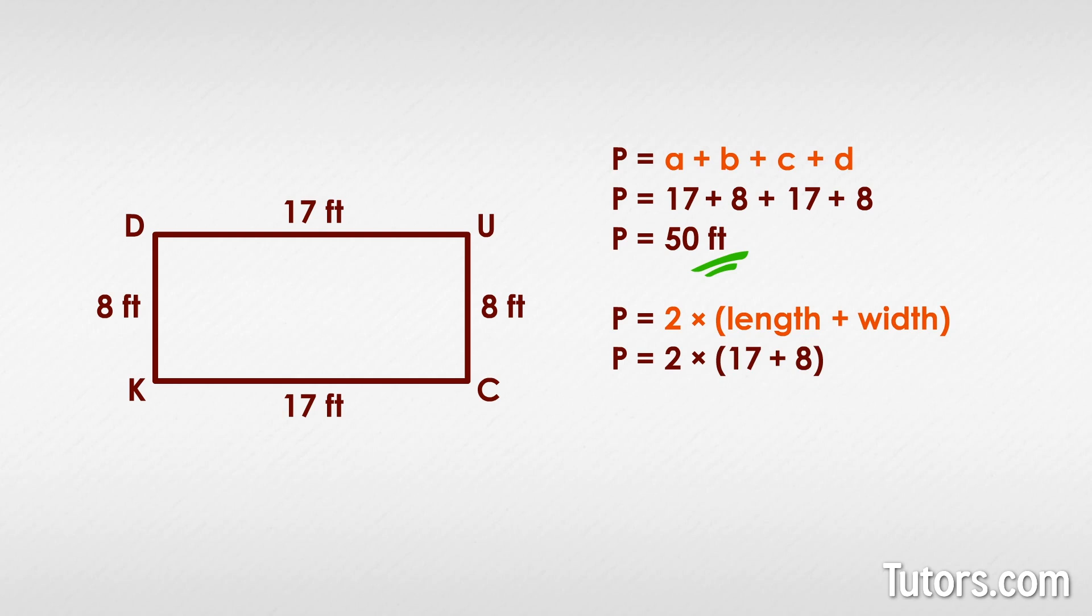Doing this gives us P equals 2 times 25, which equals 50. P equals 50. See both formulas give us the same answer.